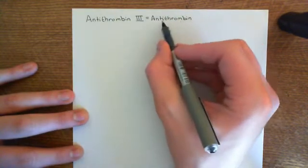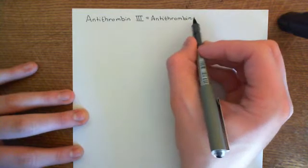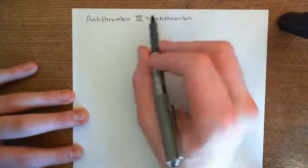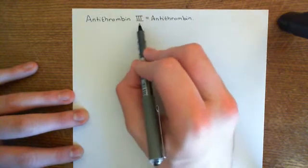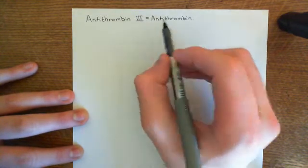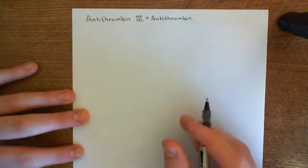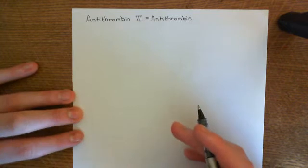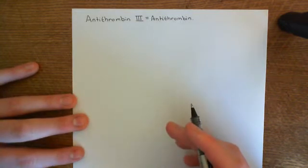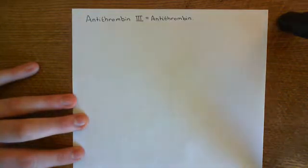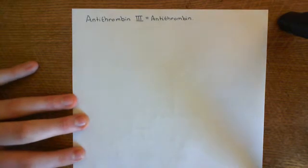If they just say antithrombin without a number, you can assume they are talking about antithrombin-III, because antithrombin-1, 2, and 4 are just not important as far as physiology is concerned. Antithrombin-III is a protein produced by the liver and is capable, when activated, of inhibiting a huge number of the coagulation factors.